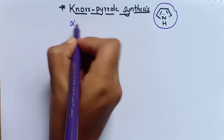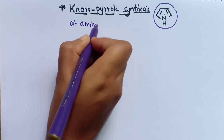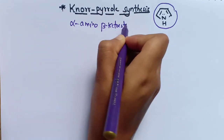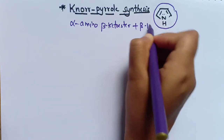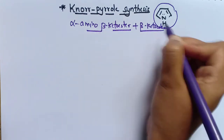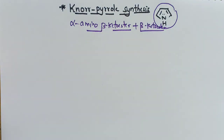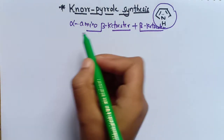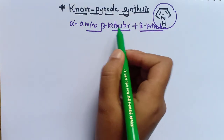Here we are going to take alpha-amino beta-keto ester plus beta-keto ester for this mechanism to synthesize pyrrole. Let's see the mechanism. Now let's see the structure of this alpha-amino beta-keto ester.